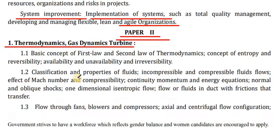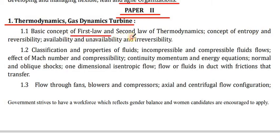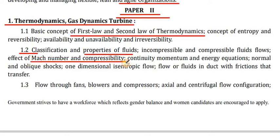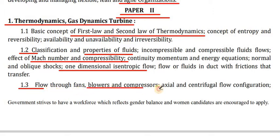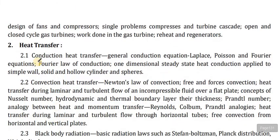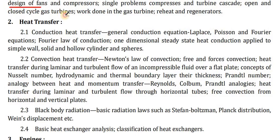Paper 2, point number 1 — Thermodynamics, Gas Dynamics, and Turbines. Basic concepts, first law and second law of thermodynamics, concept of entropy and reversibility, availability and unavailability, and irreversibility. Under 1.2 — classification and properties of fluids, incompressible and compressible fluid flows, effect of Mach number and compressibility, continuity, momentum and energy equations, normal and oblique shocks, one-dimensional isentropic flows, flow of fluid inducted with friction. Under 1.3 — flow through fans, blowers and compressors, axial and centrifugal flow configurations, design of fans and compressors, single-stage compressors and turbines, cascades, open and closed cycle gas turbines, work done in gas turbines, reheat and regenerators.